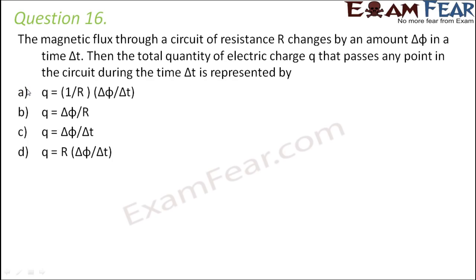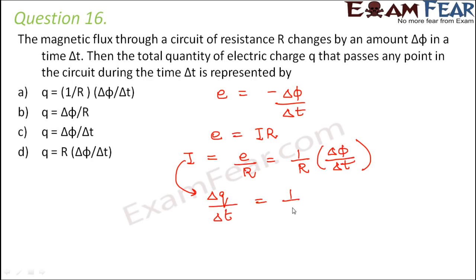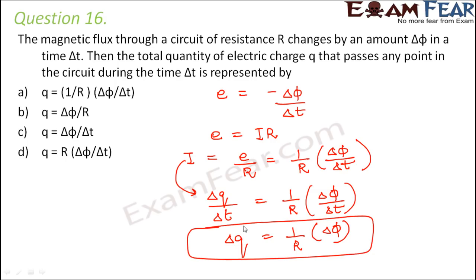Question number 16. Magnetic flux through a circuit of resistance R changes by delta φ in time delta T. Induced EMF equals delta φ/delta T, and induced EMF also equals current times resistance. So current equals (1/R)×(delta φ/delta T). Since current equals delta Q/delta T, we get delta Q equals (1/R)×delta φ. Correct option is B.